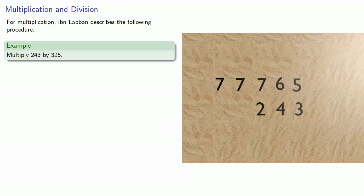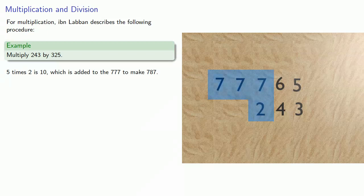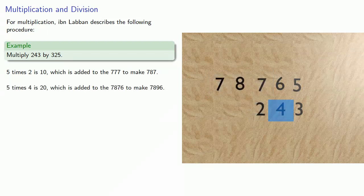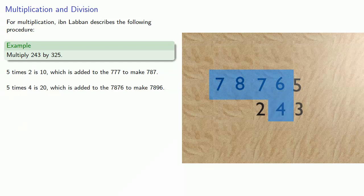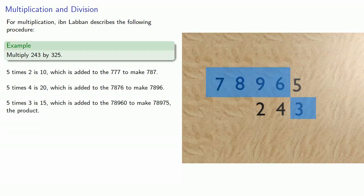So we multiply 5 by each of the digits in the lower factor. 5 times 3 is 15, which is added to make our final answer.